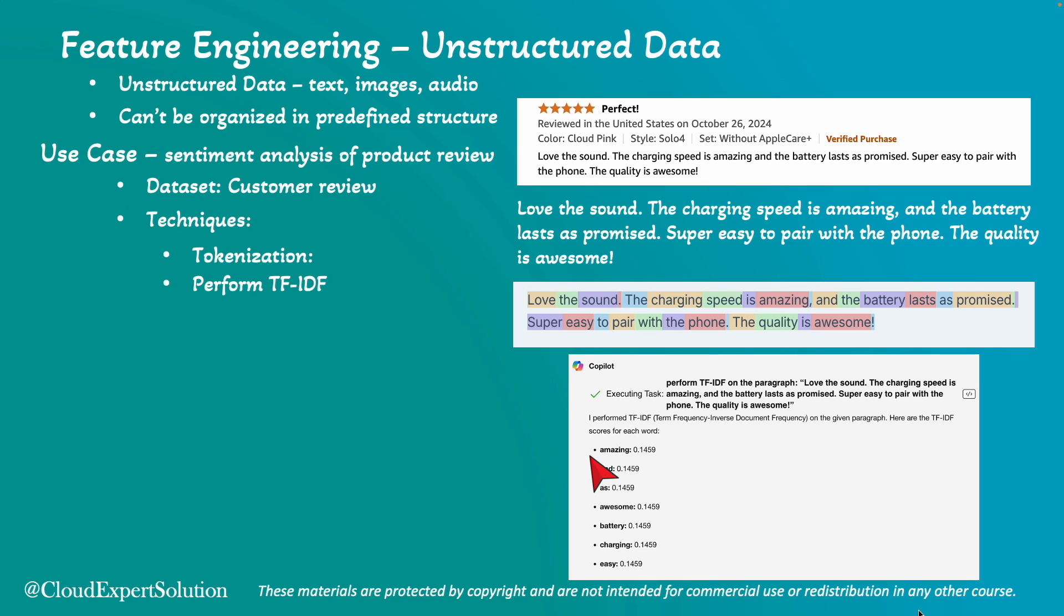For instance, in the product review, the word amazing, reflecting the customer sentiment, has highest score. By converting text data to a numerical value, it becomes easier for the model to understand the data and identify the importance or relevance of each word.